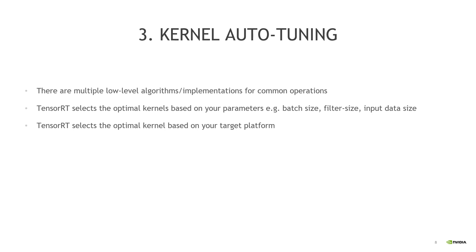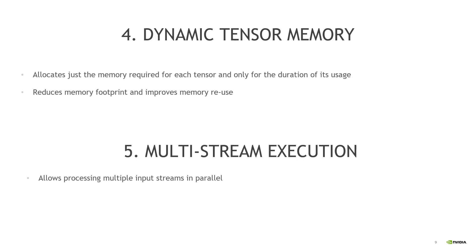The third technology is kernel autotuning. There are multiple low-level algorithms and implementations for performing common operations such as convolutions. Kernel autotuning optimizes the execution time of a kernel by choosing the best kernel from a large library of implementations, based on your configuration — for example batch size, filter size, and your target platform. The final two technologies are dynamic tensor memory and multi-stream execution. Dynamic tensor memory ensures that memory is allocated for each tensor only for the duration of its usage, reducing memory footprint and improving memory reuse. Multi-stream execution allows multiple input streams to use the same model in parallel on a single device, which is essential when scaling inference to multiple clients.